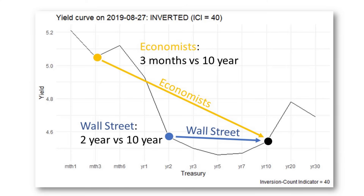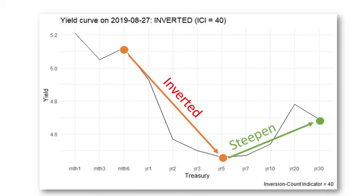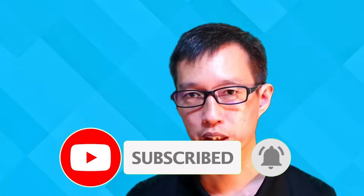Economists and Wall Street look at two different spreads on the yield curve. Economists look at the 3-month and 10-year spread — is the 3-month yield higher than the 10-year yield? Wall Street looks at the 2-year and 10-year spread. Sometimes these two spreads don't tell the same signal. In August 2019, economists said the yield curve was already inverted based on the 3-month/10-year spread, but Wall Street's 2-year/10-year spread showed the curve was basically flat. So how do we objectively measure whether the yield curve is truly inverted?